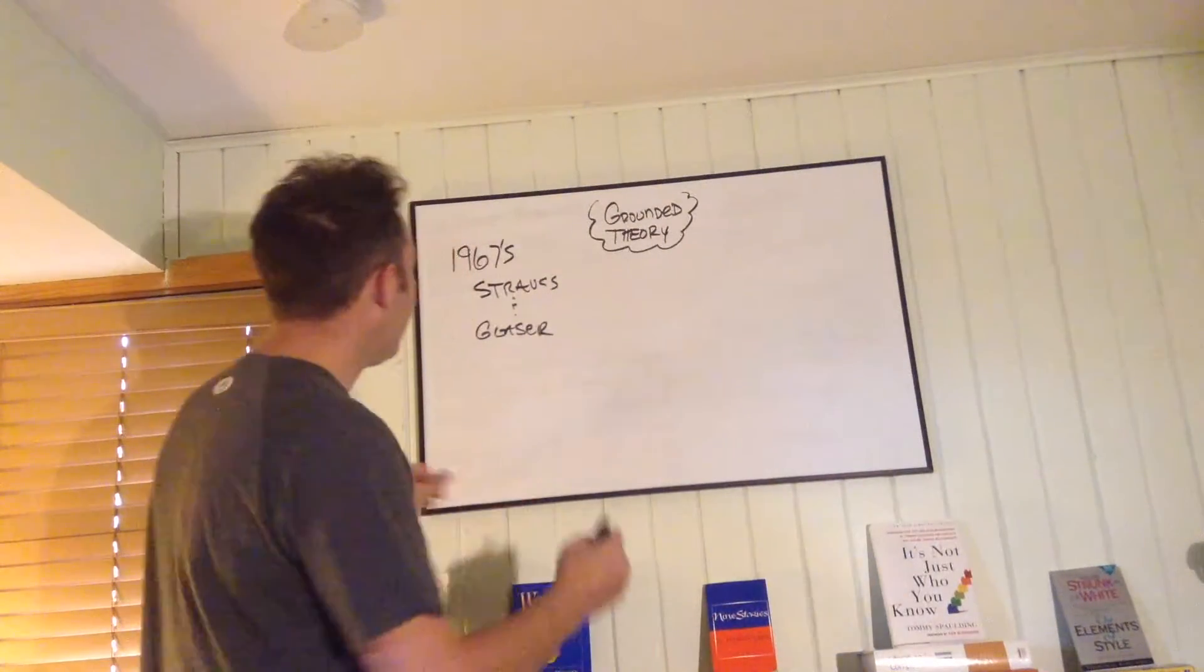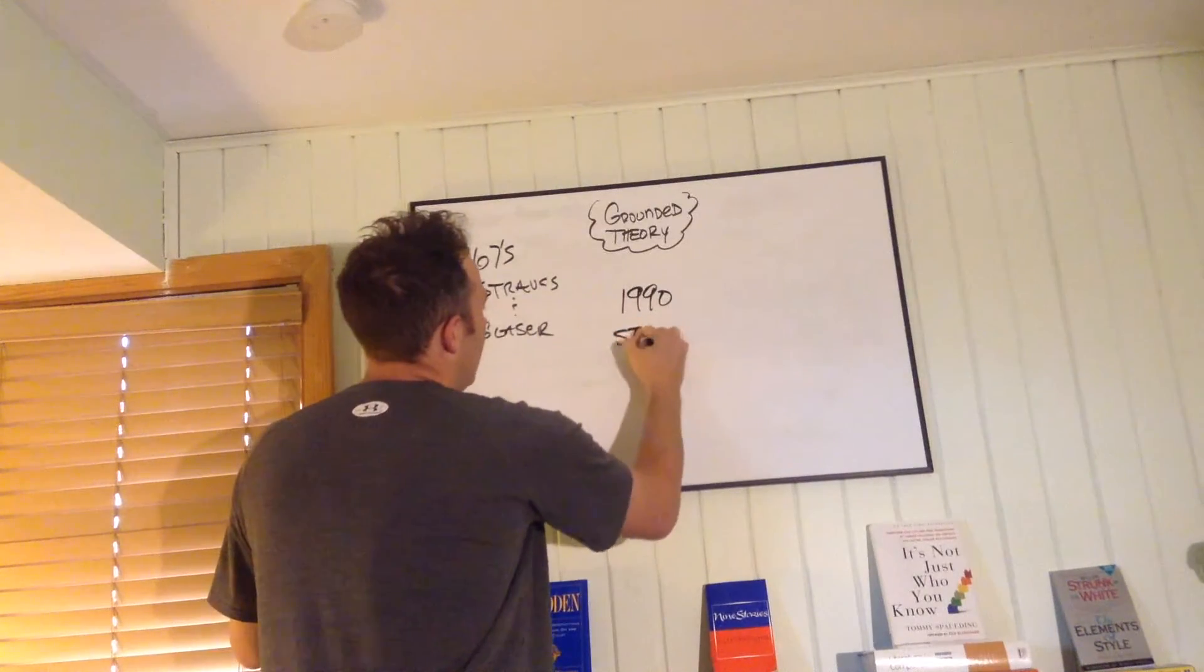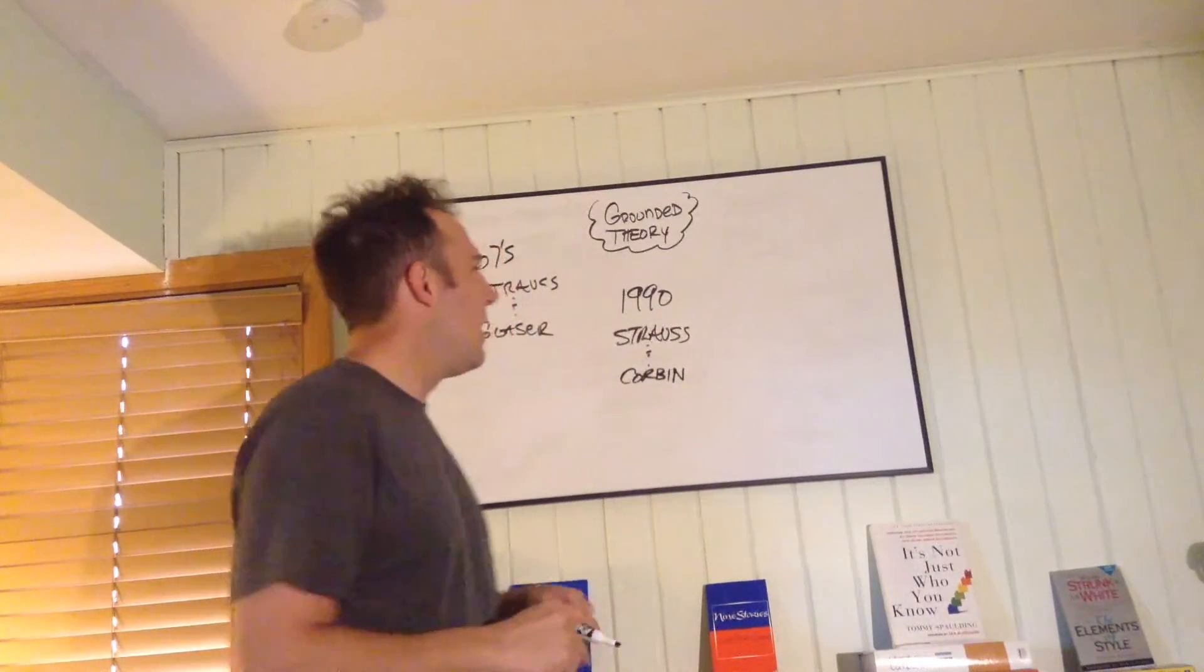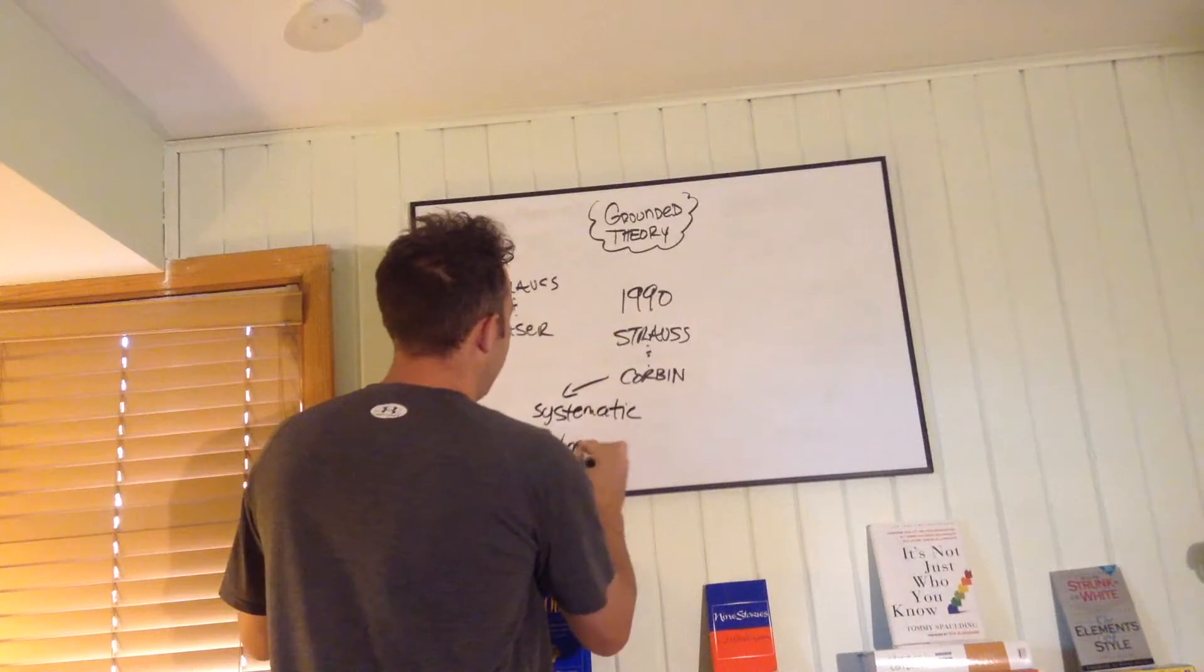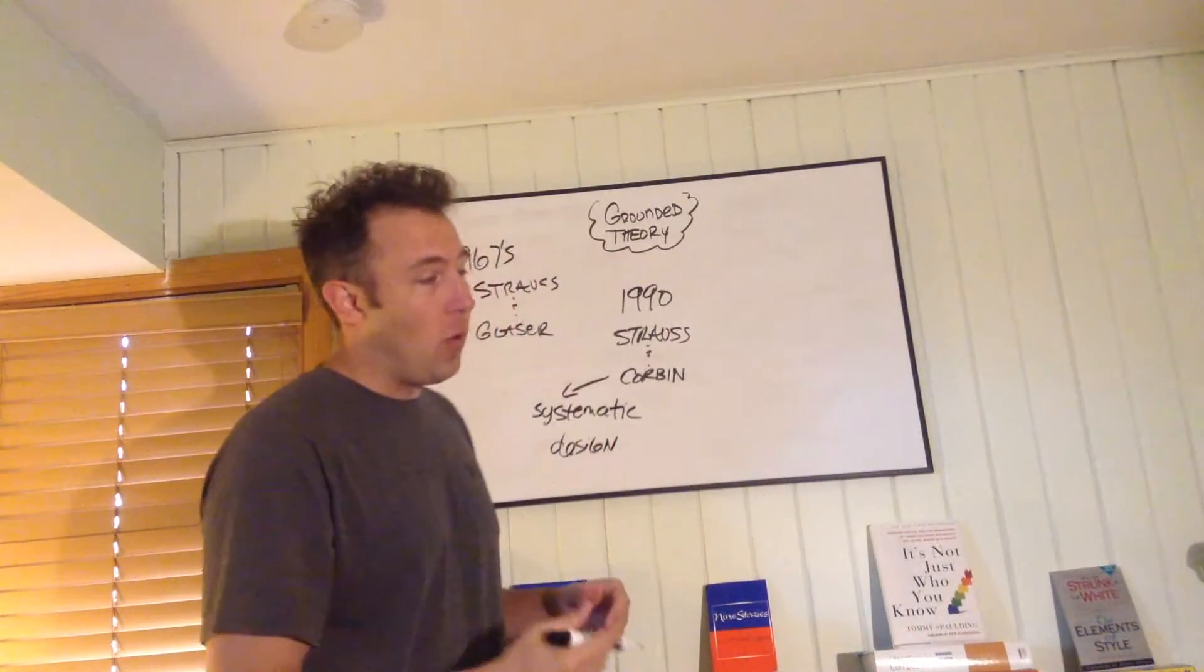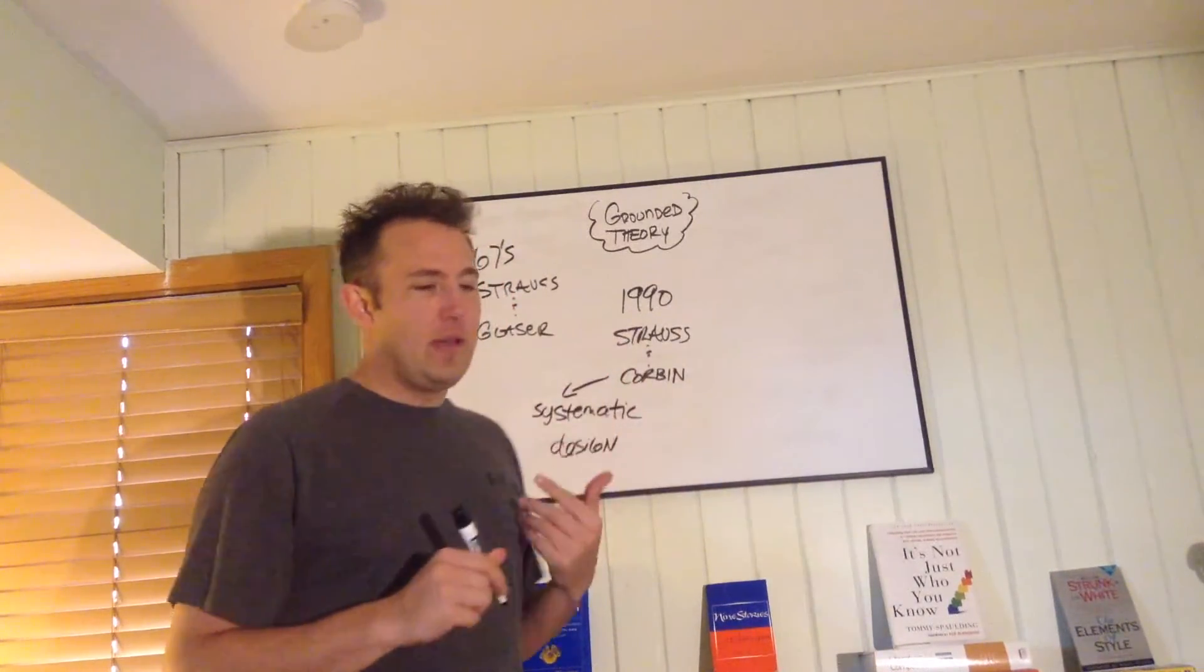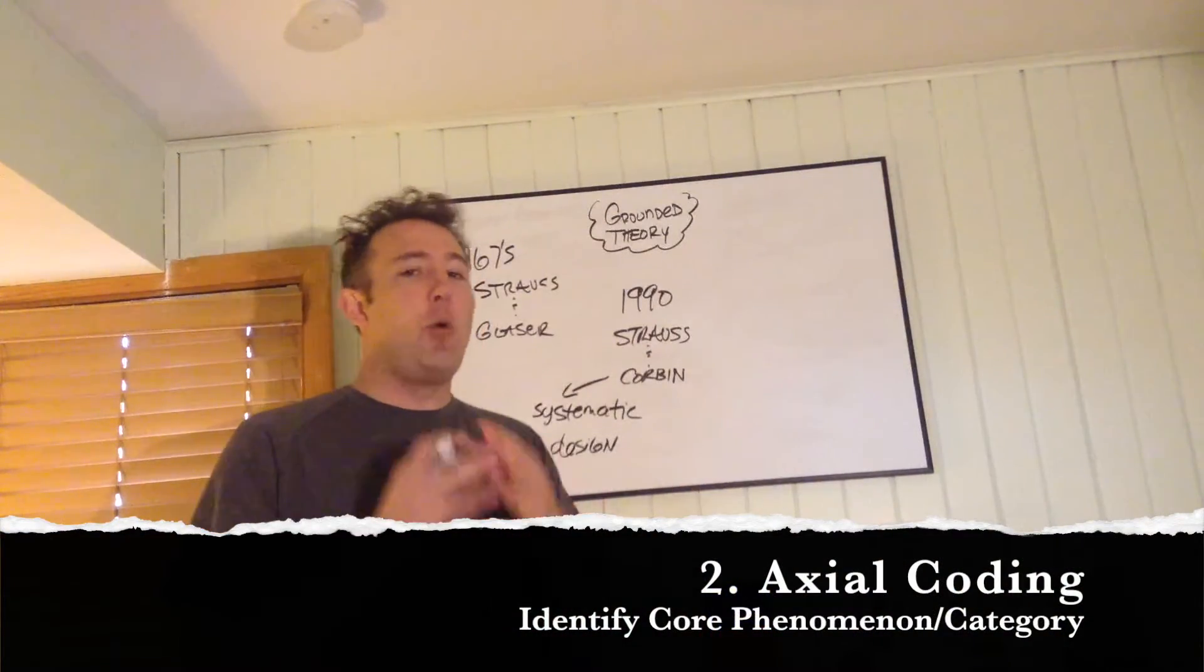That's in the 1960s. A couple decades past, and then in 1990, Strauss teams up with a gal named Korman. And they kind of revamp the idea of grounded theory and create what is now referred to as systematic design. Systematic design is recommended for new PhD students or first-time dissertation students or writers because Strauss and Corbin developed a system to help the researcher identify categories, themes, things like that, help them develop this theory.